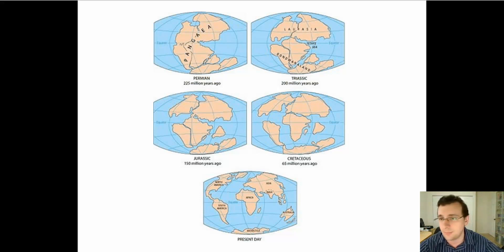But the last supercontinent cycle we know a lot about, and that's the one you see on the screen right now. I'm referring to the cycle that started with Pangaea breaking apart because of a rift, and then eventually you end up with something that looks like today. This is what happened since the Permian period which started about 225 million years ago. This is not a very long time in geological terms.